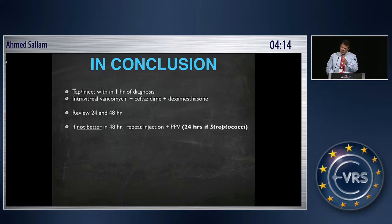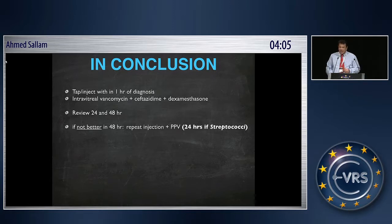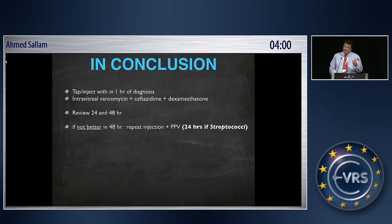If not better, usually the decision point is 48 hours. At 24 hours, if it's a virulent organism — if you grow strep, or it looks like strep — then you need to take another action, usually a vitrectomy with repeat injection. If you have culture data, use it; otherwise, treat empirically again.